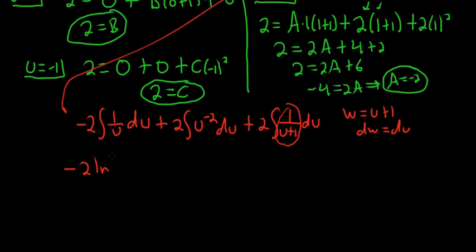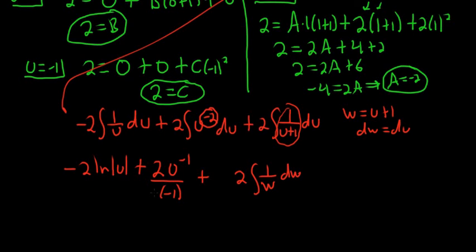So this ends up being, let's see, negative 2 ln, absolute value of u, plus 2. Here we use the power rule. So we get u to the negative 1 over negative 1 plus, and then we said this one was 2, 1 over w dw.